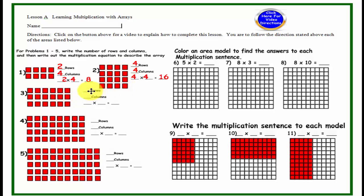Problem number 3, we have 3 rows, and we have 6 columns, so 3 times 6 is 18. Here is row 1, 2, 3, 4, 5, 6.